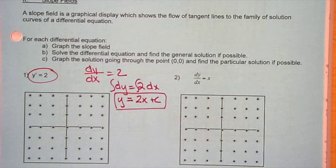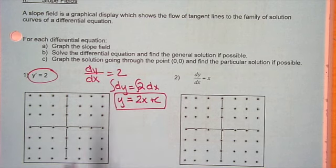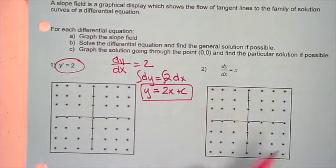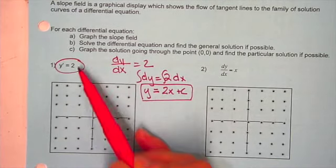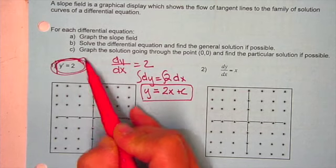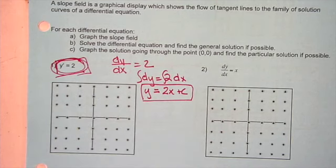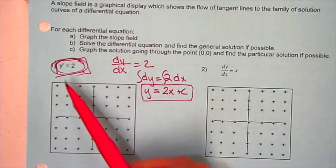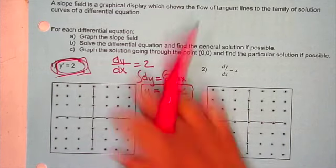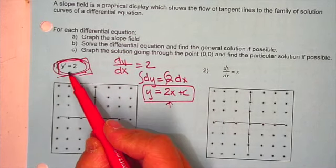So this is called our general solution. Now another way to think about a differential equation is to look at it graphically. We're going to graph the slope of this equation. What this is saying is, for whatever the original function is, the slope is always 2.